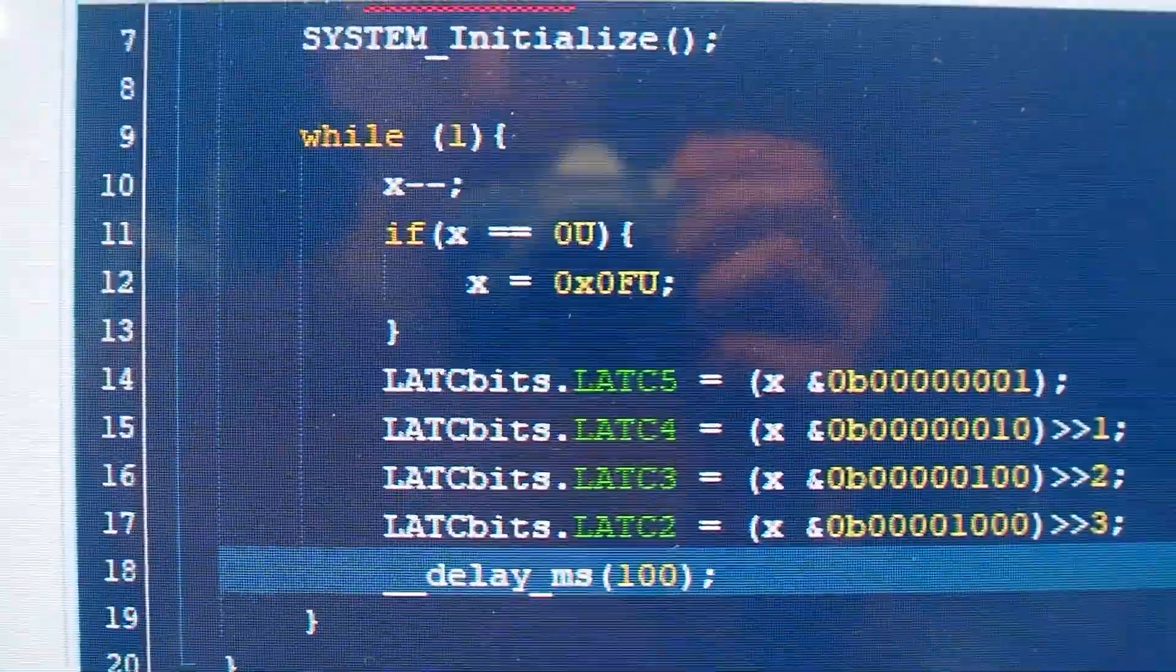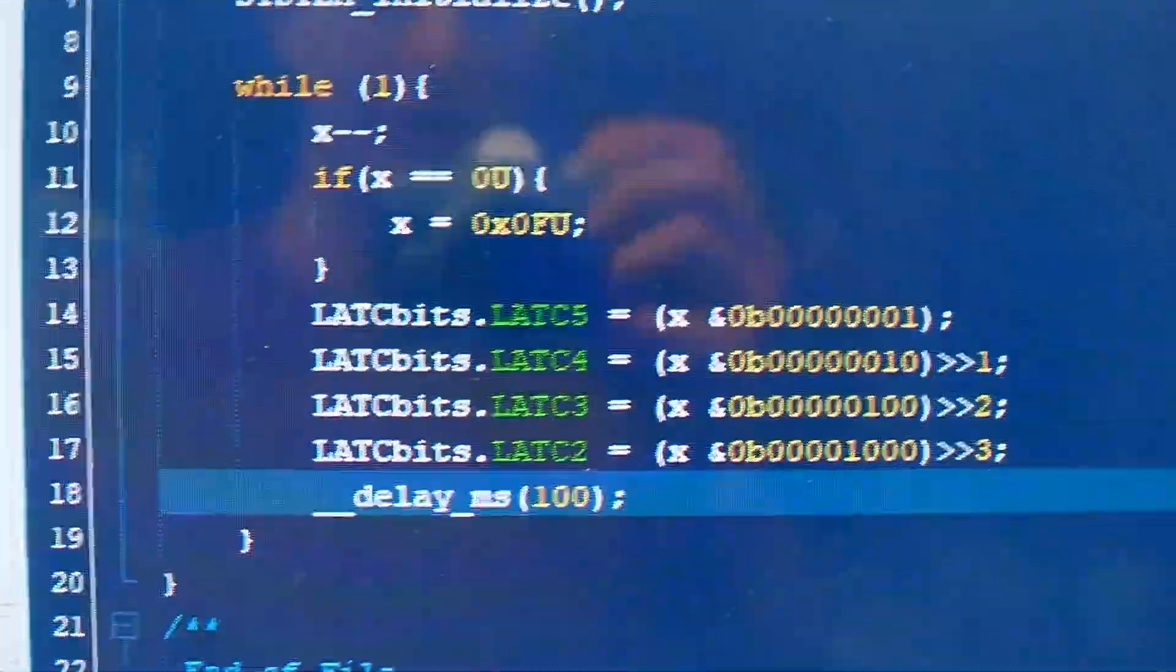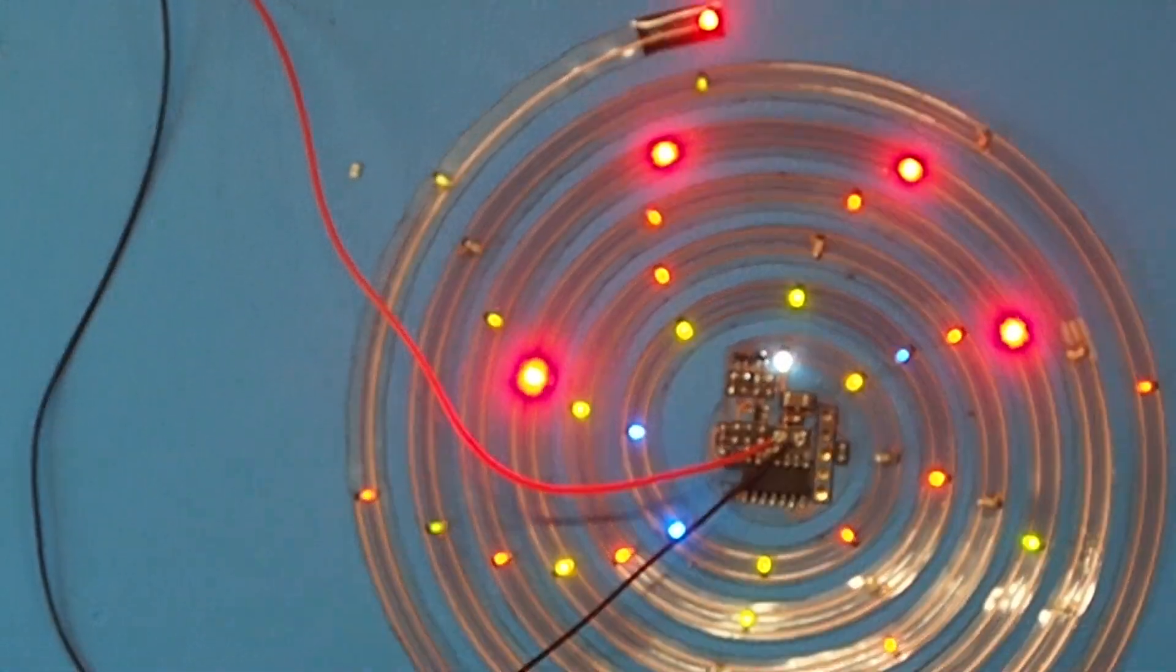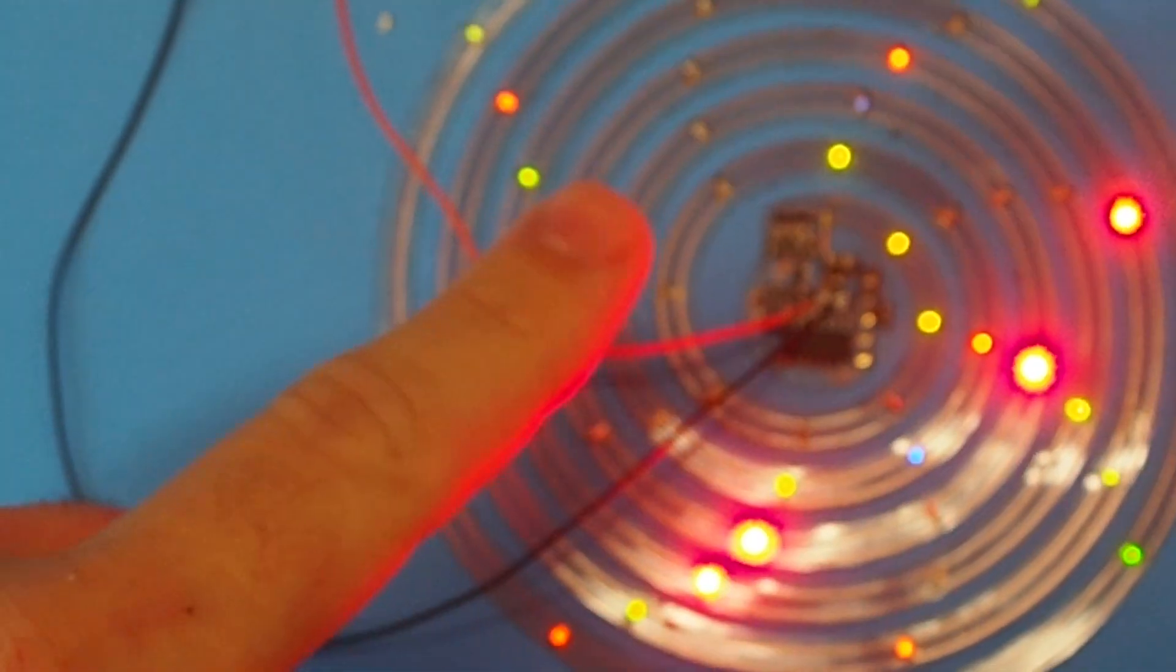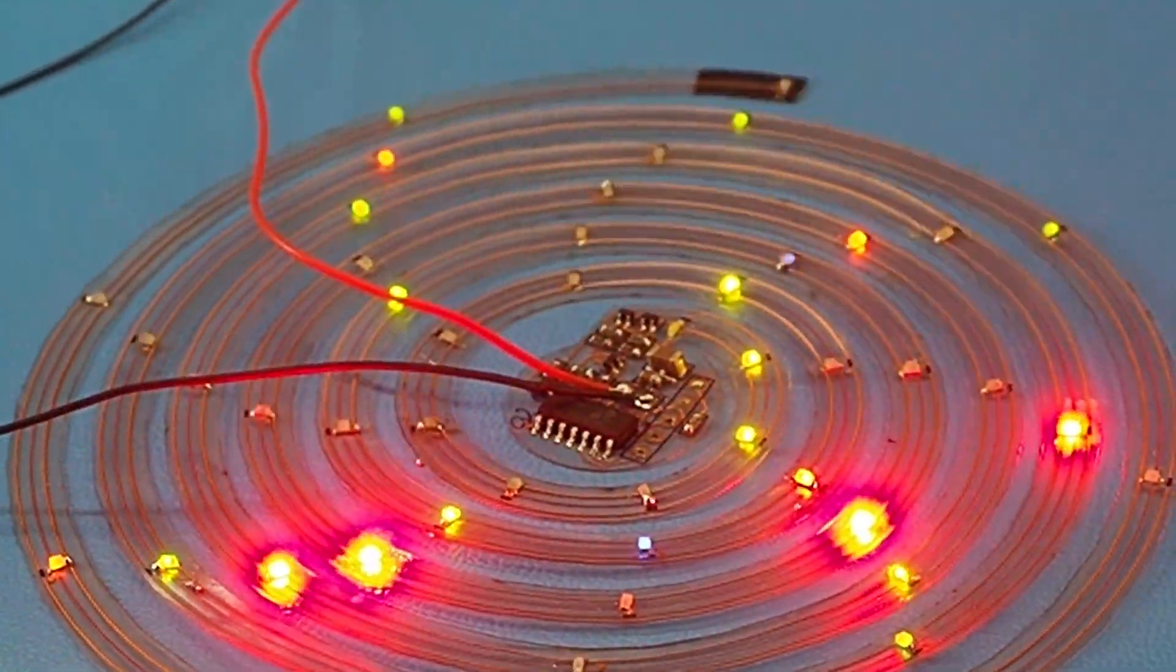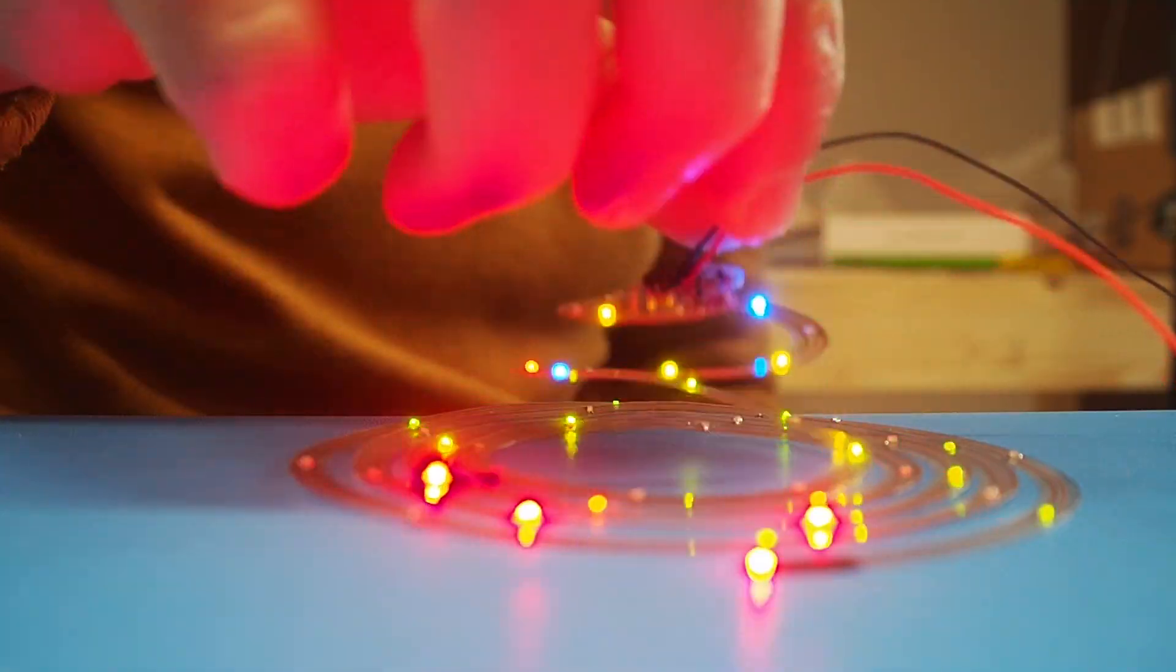So I have flashed this dummy software that goes through all the MOSFET combinations one by one every 100 milliseconds, and all the LEDs are now blinking. Here we have some orange, green, blue, and red LEDs, and one white LED at the top. As expected, these are not switching with the same brightness, but this makes for a nice Christmas tree look. Now let's see how it unfolds.